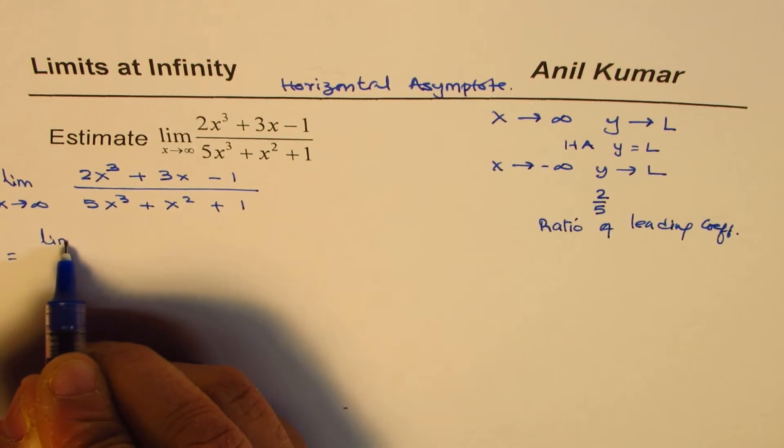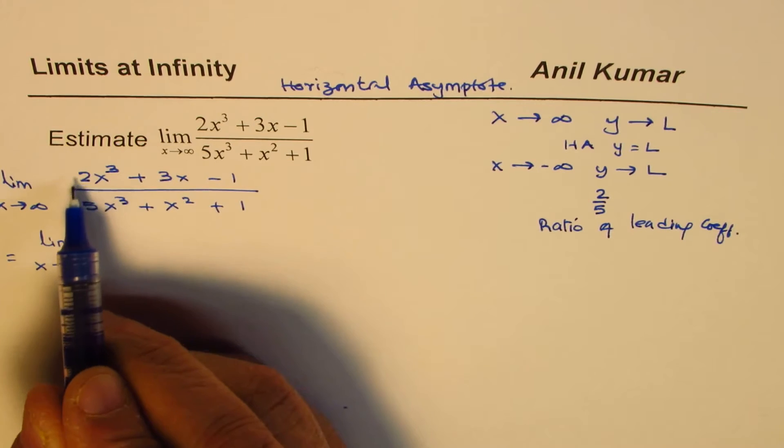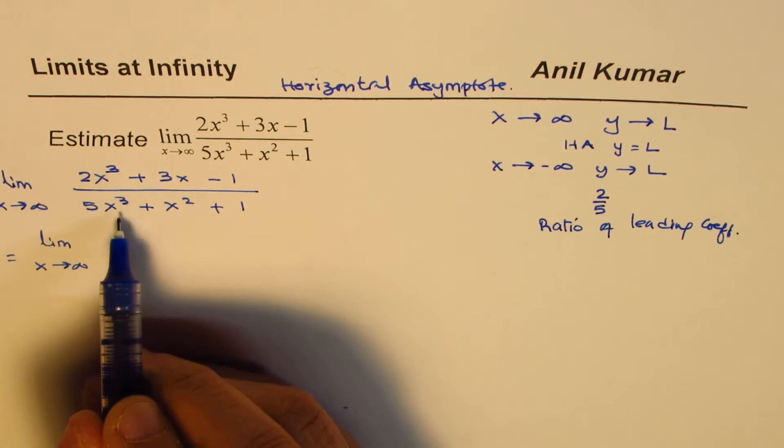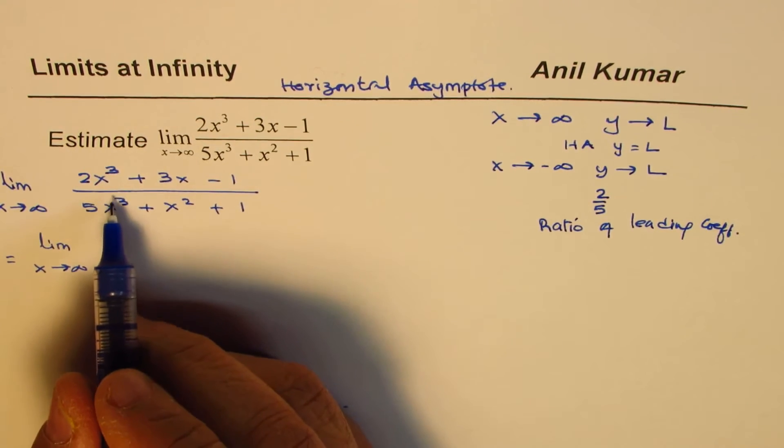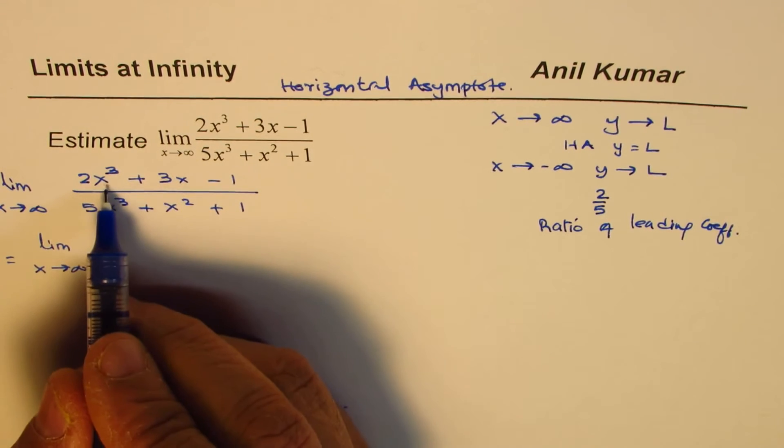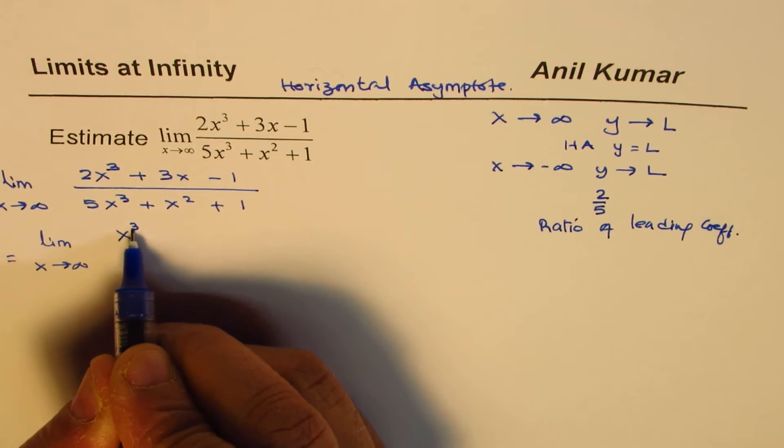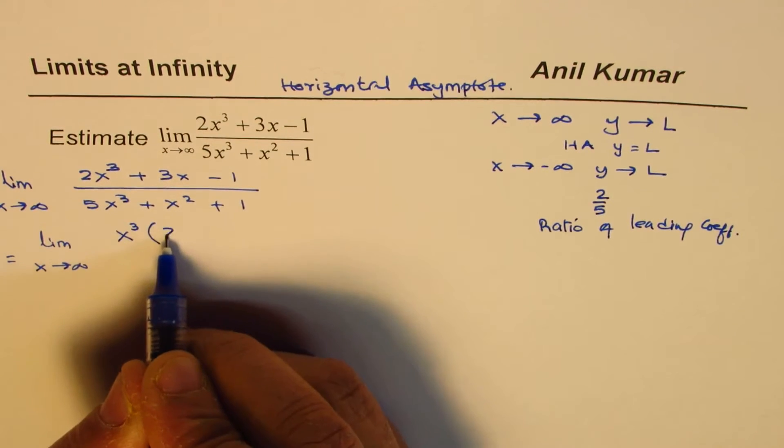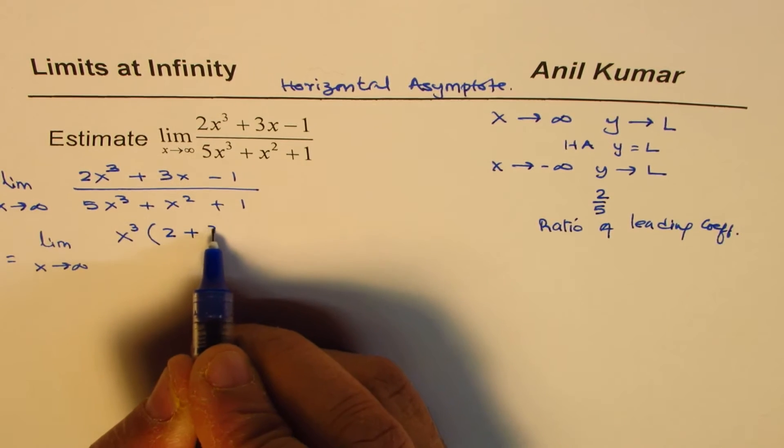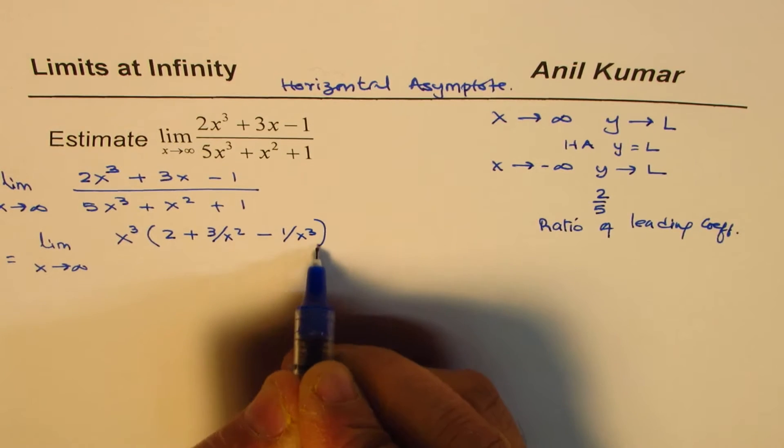What we can do here, and what we should do in solving such questions, is take x³ common in both numerator and denominator. Take the highest degree and take it common. So we get x³ as common and we get 2 + 3/x² - 1/x³. That's the numerator.